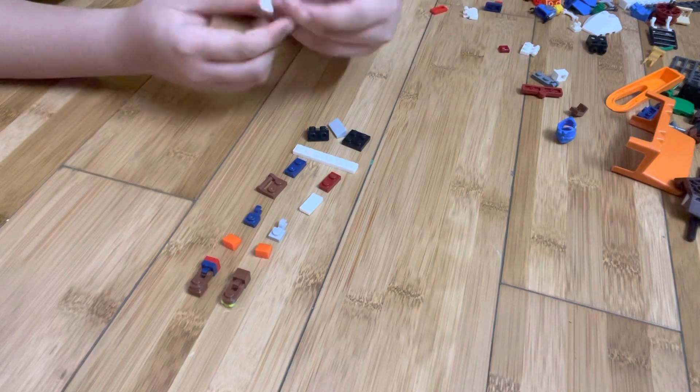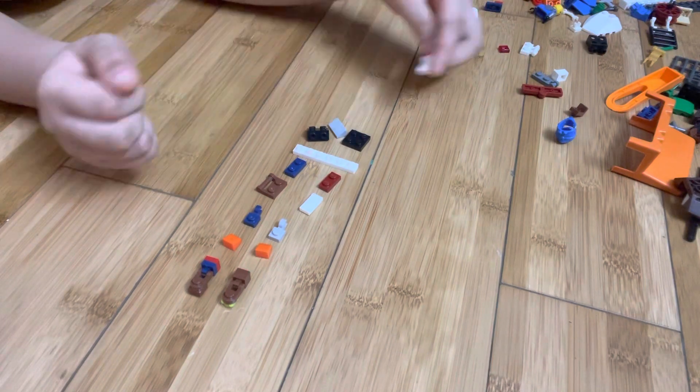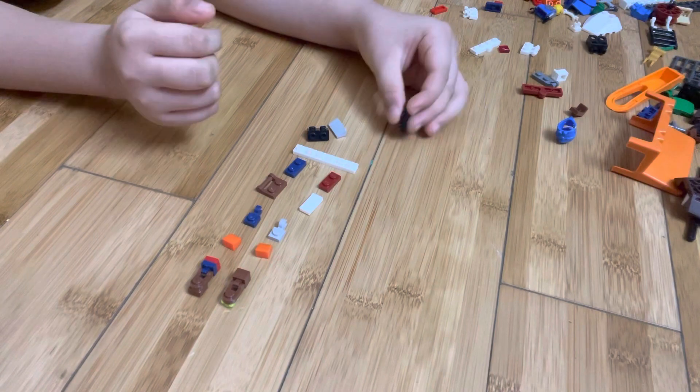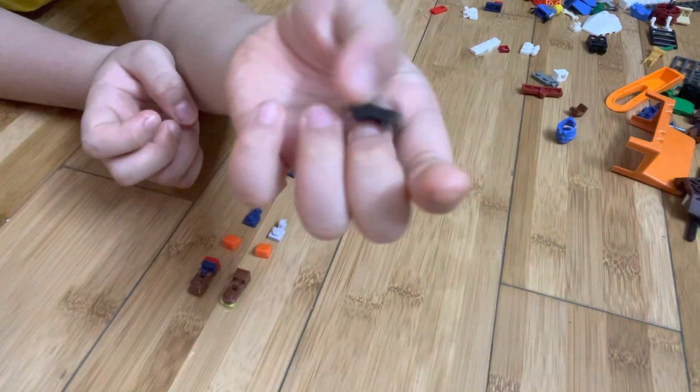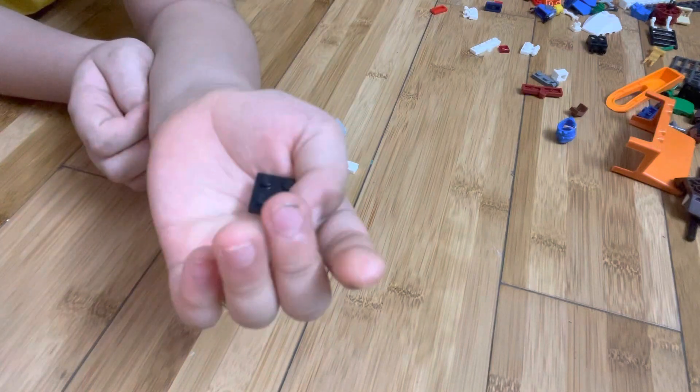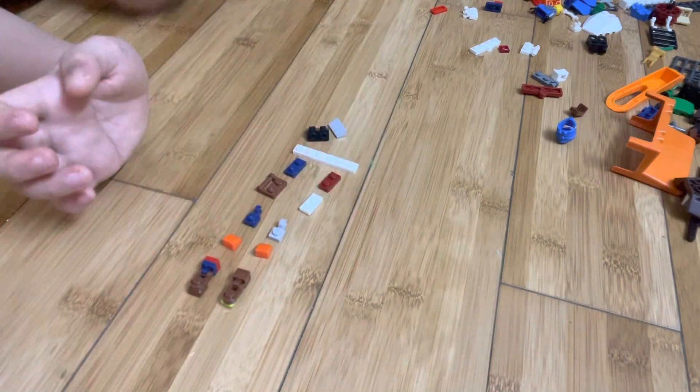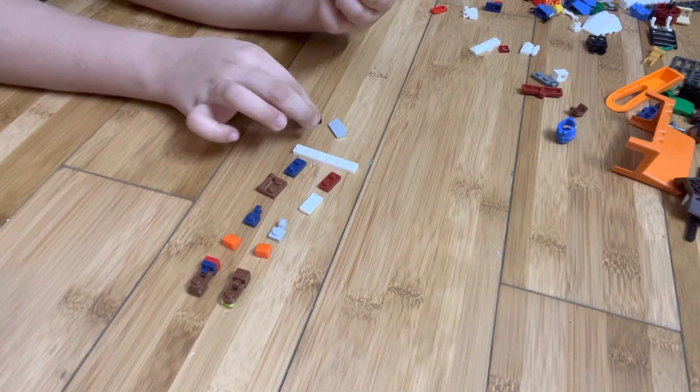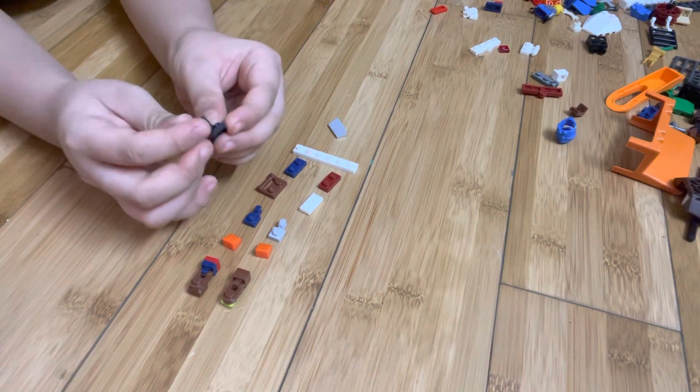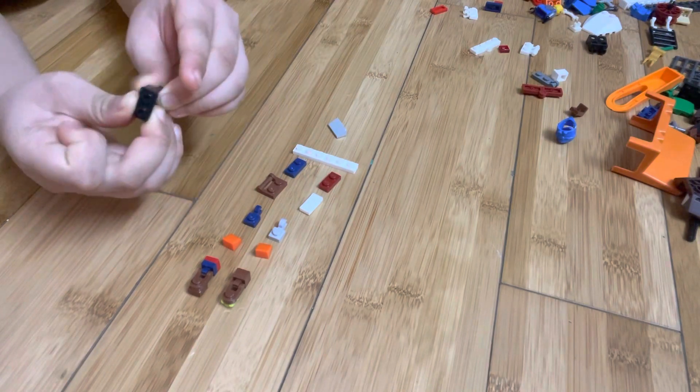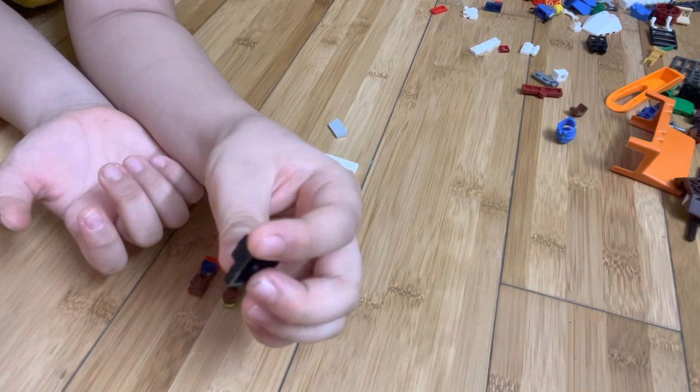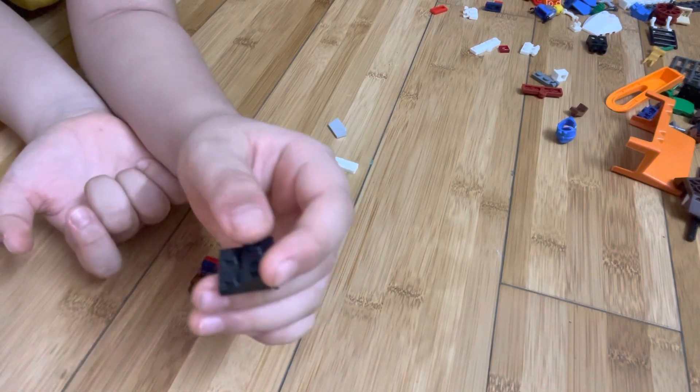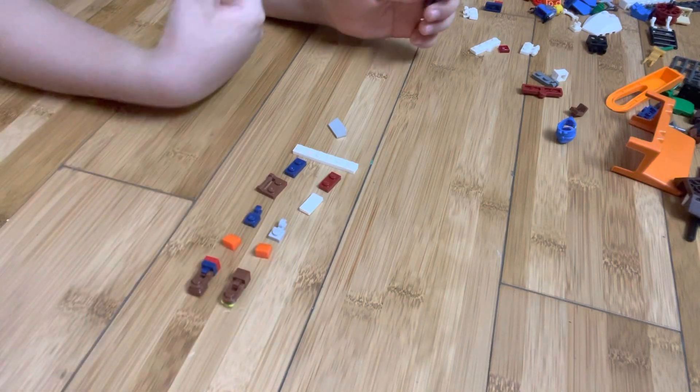First I'm gonna get this 2x2 piece with four dots on it, and then we'll place this piece right here. Now it has a 2x2 piece with two dots in front of it.